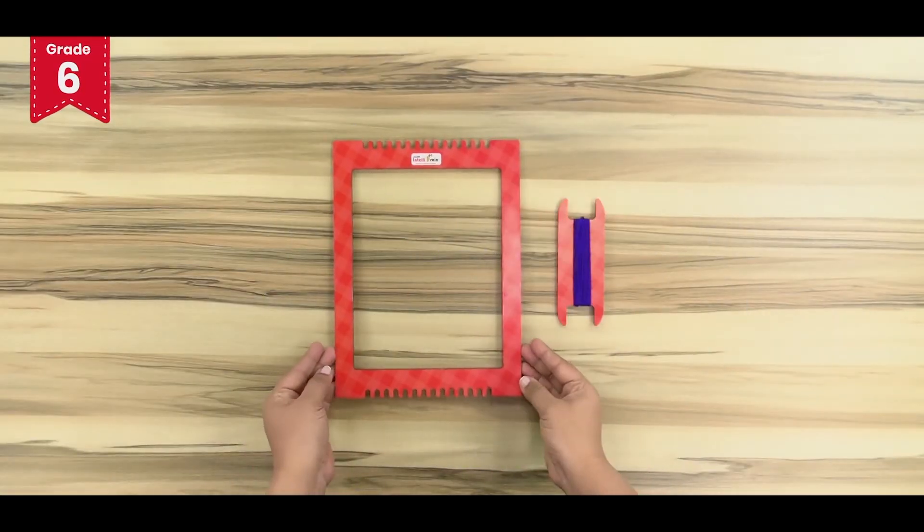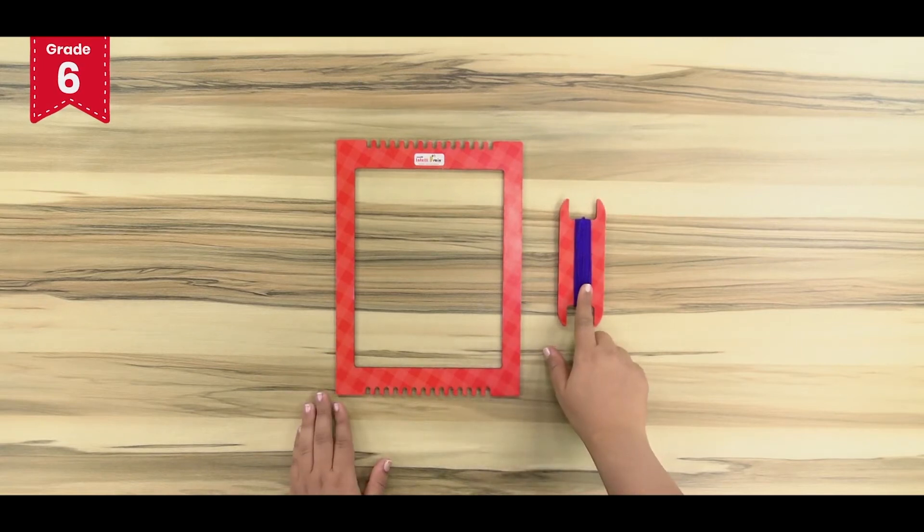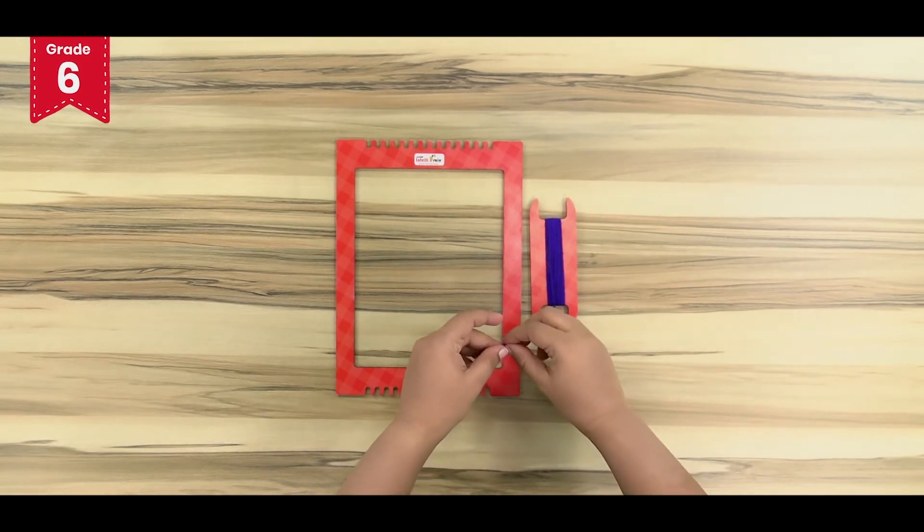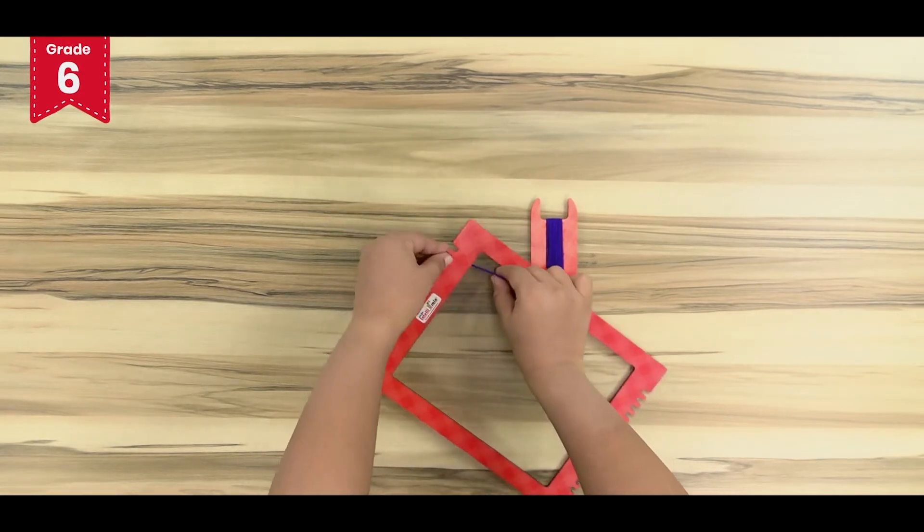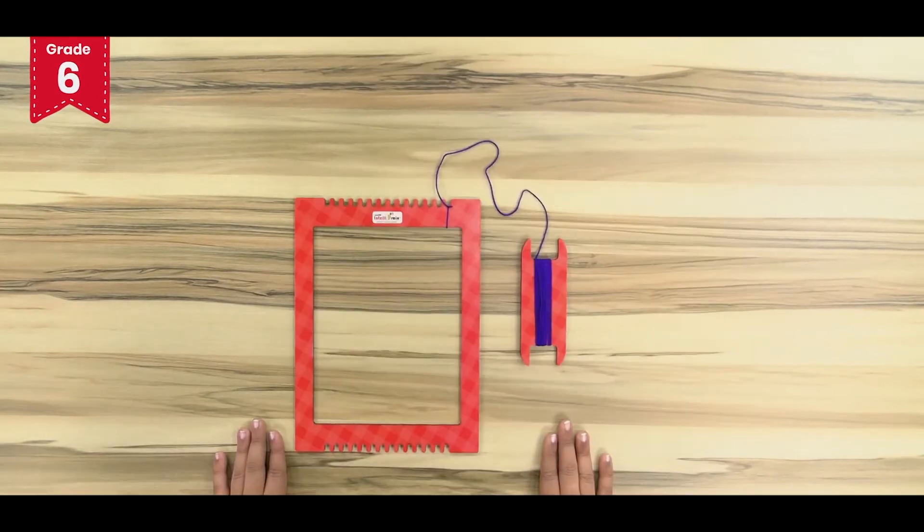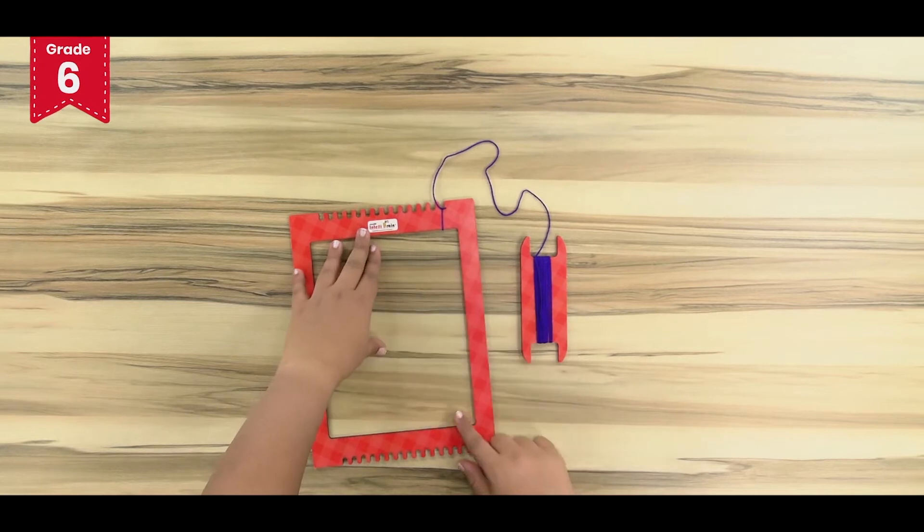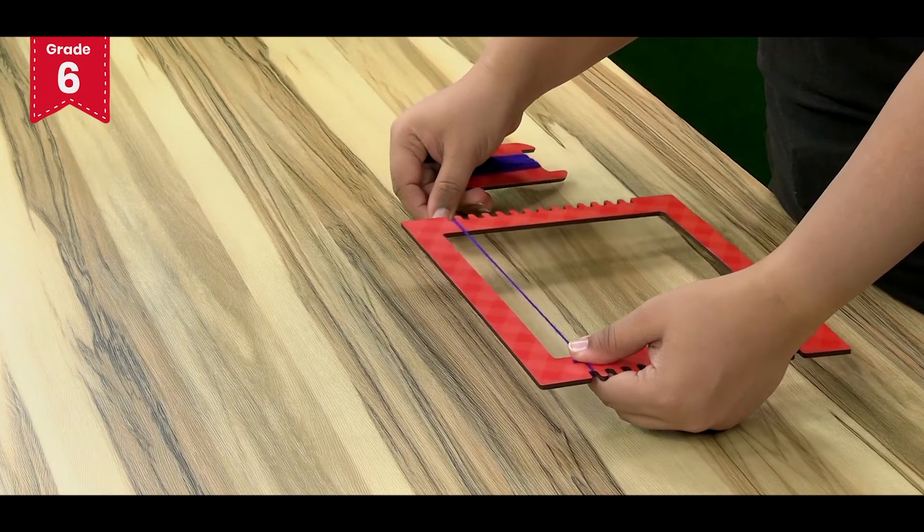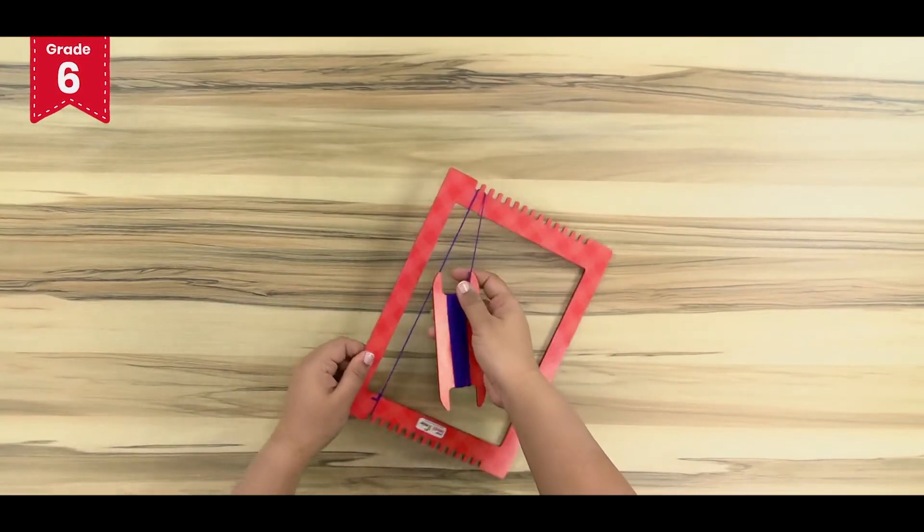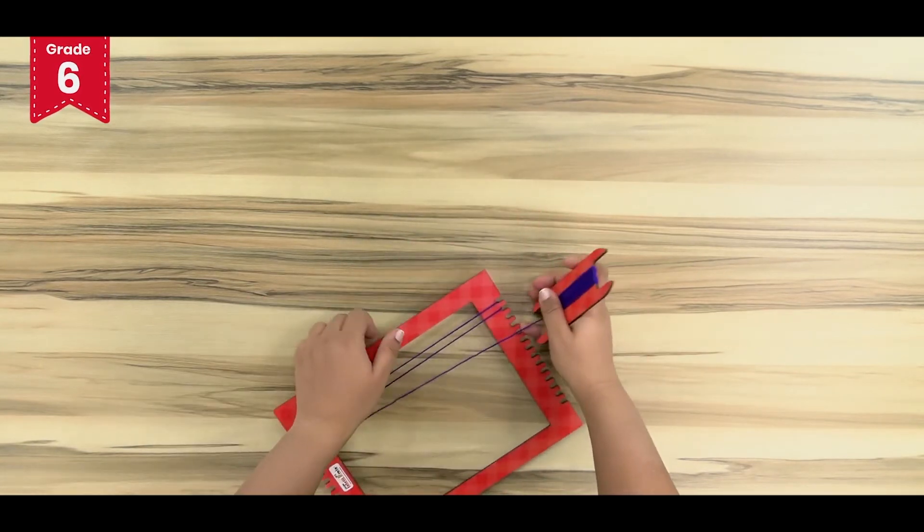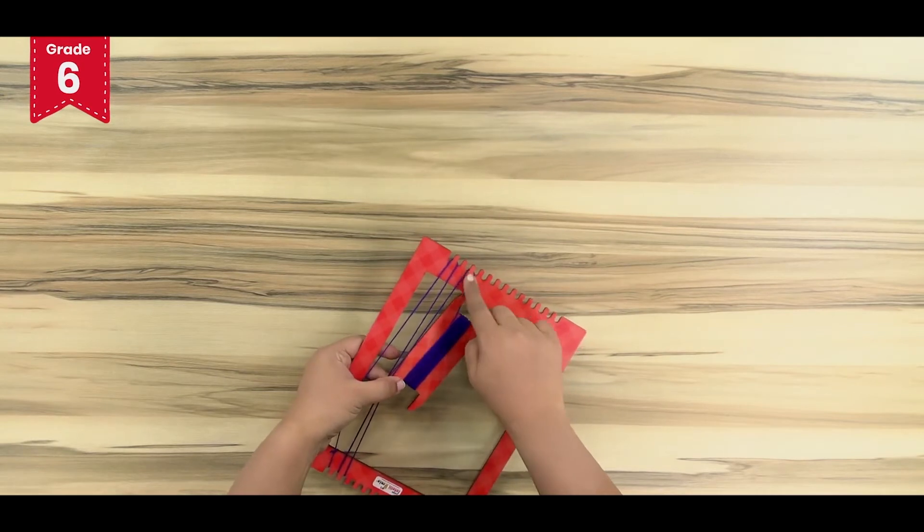Take the weaving frame. Now take the warp yarn, that is the blue thread, and tie its end to the weaving frame like this. Now loop in the thread tightly in the teeth of the weaving frame like this. Can you see this?